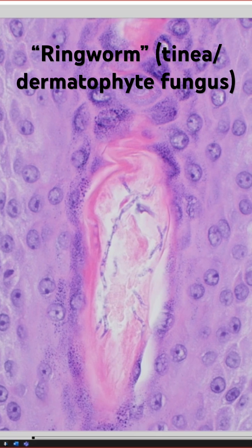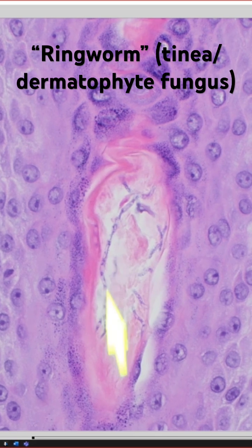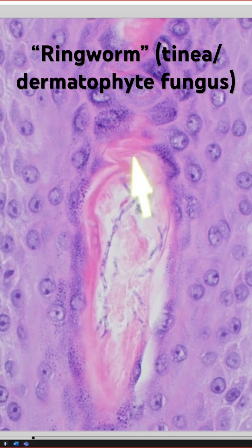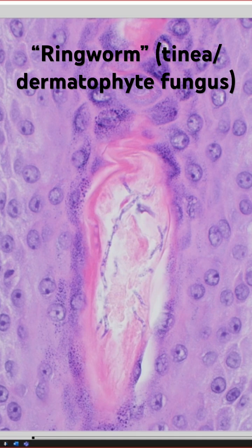You can see it right here, and it's kind of got a purplish stain. Normally, dermatophytes are clear on H&E, but Malassezia or Pityrosporum, and also Candida, are almost always bluish-purple like this.